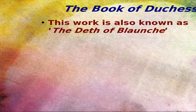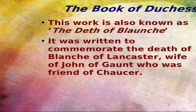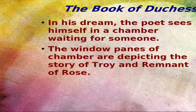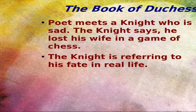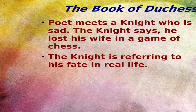The second important work of Geoffrey Chaucer was the Book of the Duchess, also known as The Death of Blanche. It was written by him when Blanche of Lancaster died, who was the wife of John of Gaunt, a friend of Chaucer, and it was written to commemorate her death. In this poem, the poet is lying in bed reading a book. He starts dreaming, and in his dream he sees himself in a chamber. The window panes depict the story of Troy and the Romaunt of the Rose. The poet meets a knight in the chamber who was sad, and the poet asks him the reason. The knight says he loses his wife when he played a game of chess with Fortune — basically the knight is referring to fate in real life.